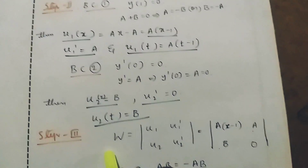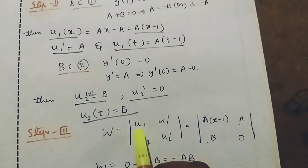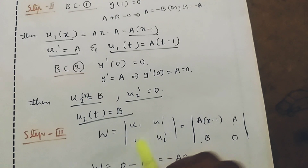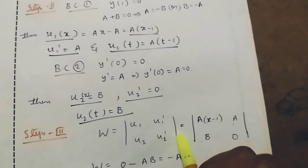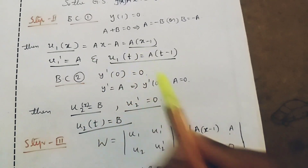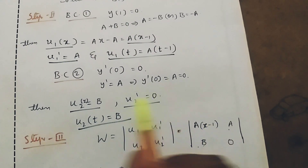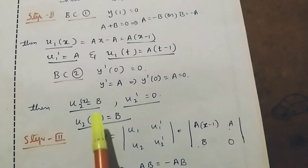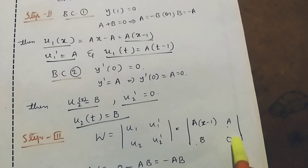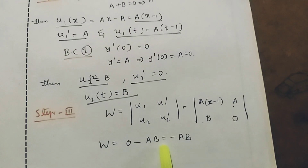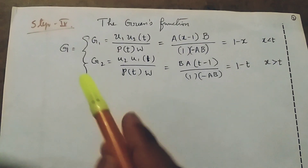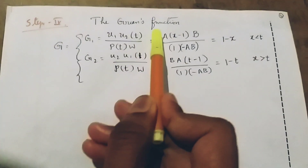Step three: W is the Wronskian determinant of u₁, u₁ dash, u₂, u₂ dash. Here u₁ equals a(x minus 1), u₁ dash equals a, u₂ equals b, and u₂ dash equals zero. Therefore W equal to minus ab.